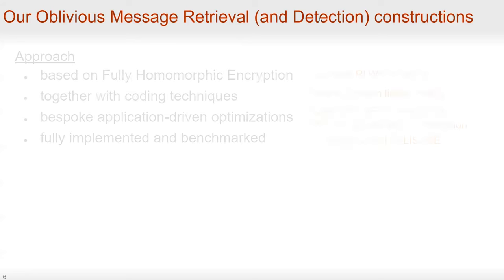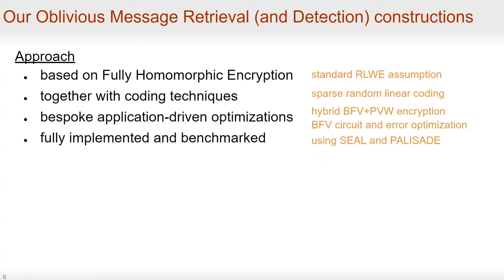Our result is that we have constructed OMR and OMD. Our approach is based on fully homomorphic encryption (FHE) under the standard Ring-LWE assumption, together with coding techniques like sparse random linear coding. We have also applied application-driven optimizations such as the hybrid use of BFV and PVW encryption, BFV circuit and error optimization, and more. We have fully implemented and benchmarked our constructions using the SEAL and PALISADE libraries.